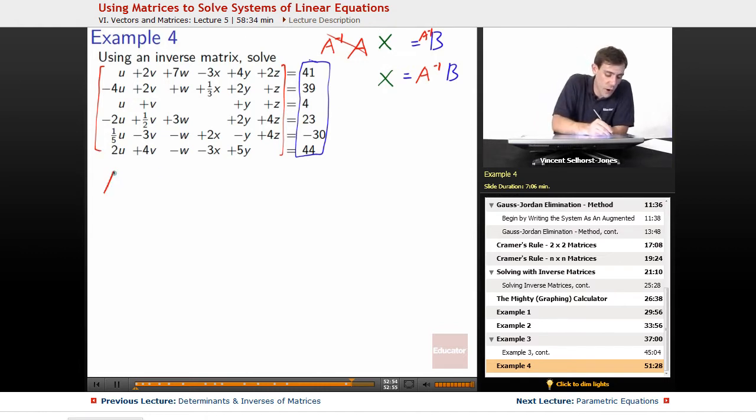So, we figure out what is A. So we figure out A is, it's going to be a big one, our U's first. 1U, negative 4U, 1U, negative 2, 1 fifth U, 2U. Next up are V's, 2V, 2V, 1V, 1 half V, negative 3V, positive 4V, 7W, 1W, 0W, because it didn't show up, 3W, negative 1W, negative 1W.